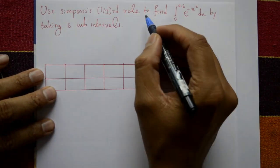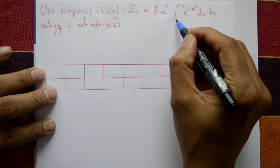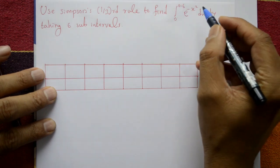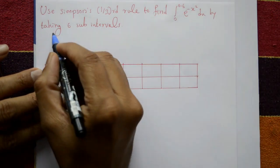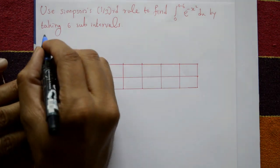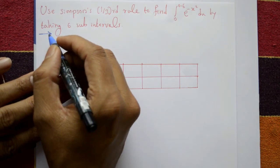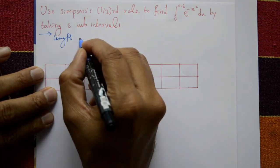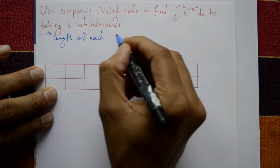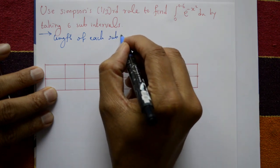Use Simpson's 1/3rd rule to find the integration from 0 to 0.6 of e to the power minus x squared with respect to x by taking six sub-intervals. Now for the solution.